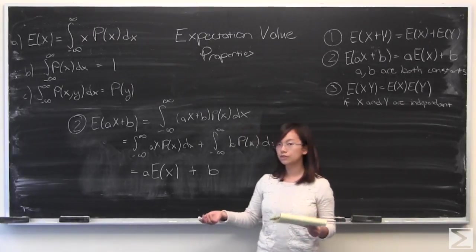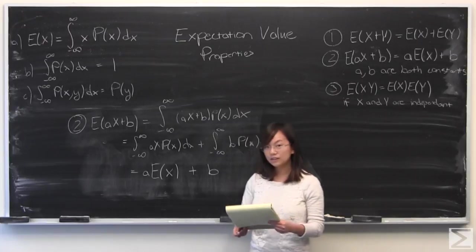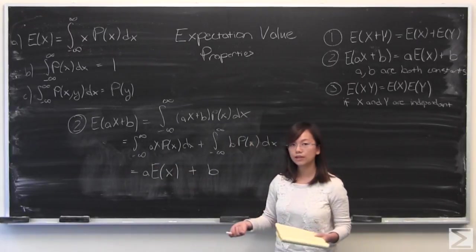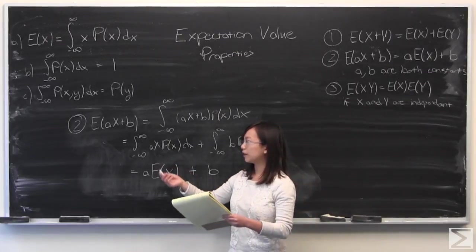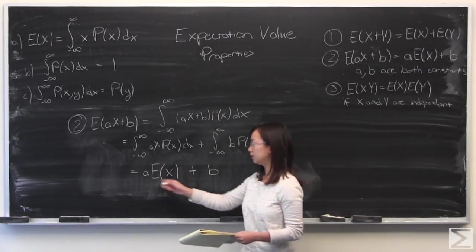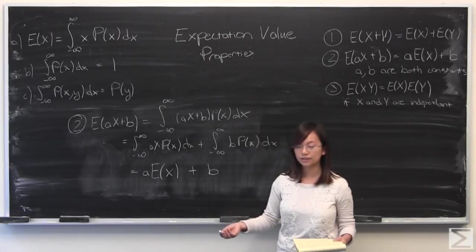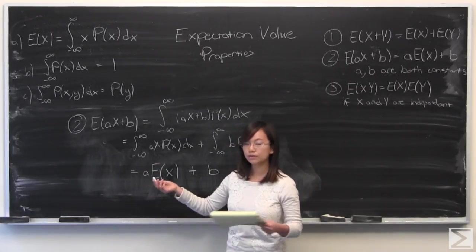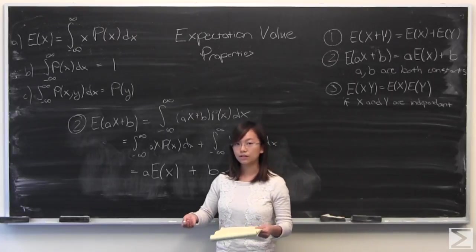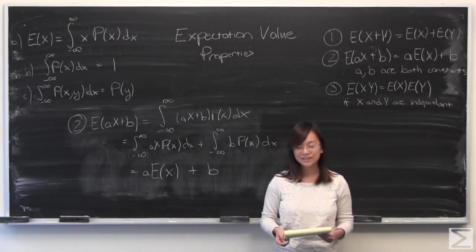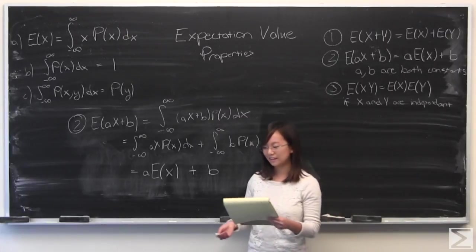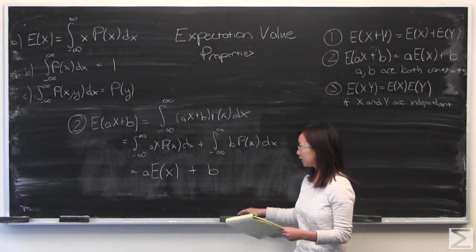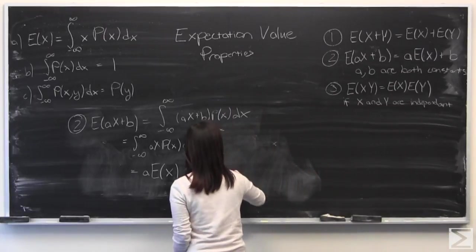I'm going to mention that you've also proven two subsets of this. If you set a equal to 1, you prove that E(X+b), where b is some constant, equals E(X) + b. And if you set b equal to 0, you've proven that E(aX) equals a·E(X). So those are two neat things that come from that one. This is a very important property as well. I'm going to move on to prove number three.